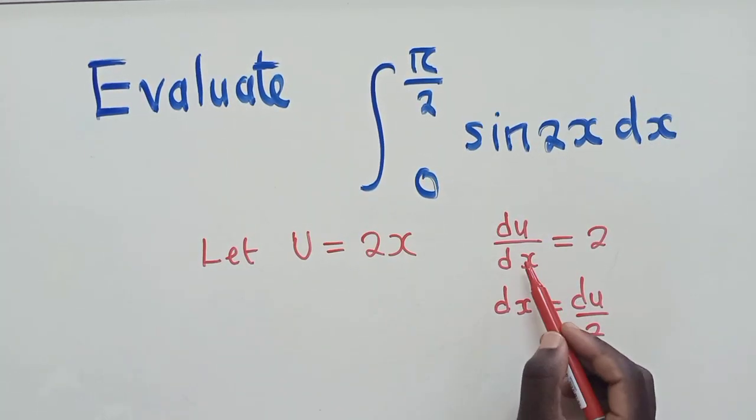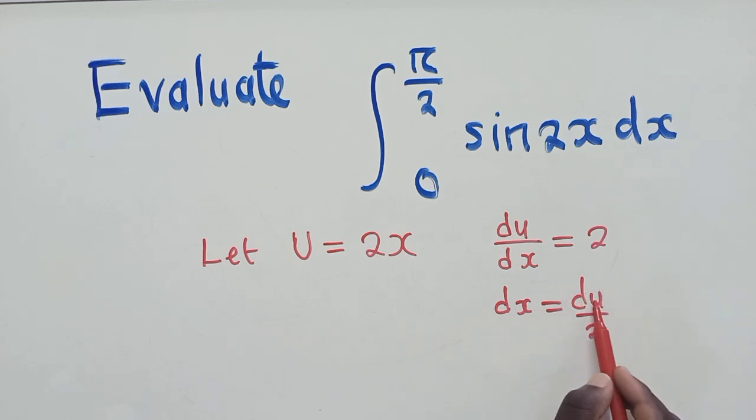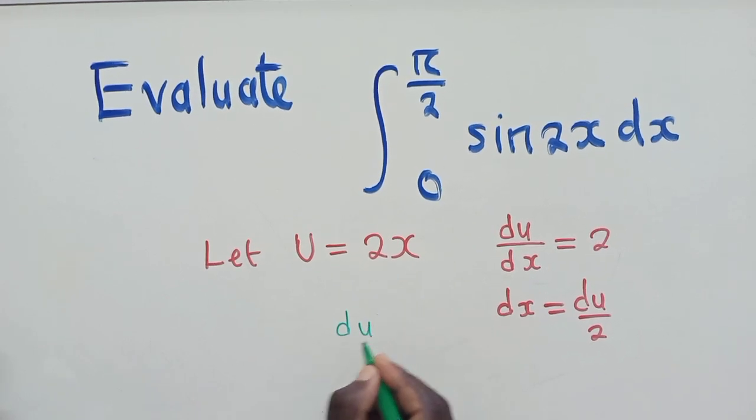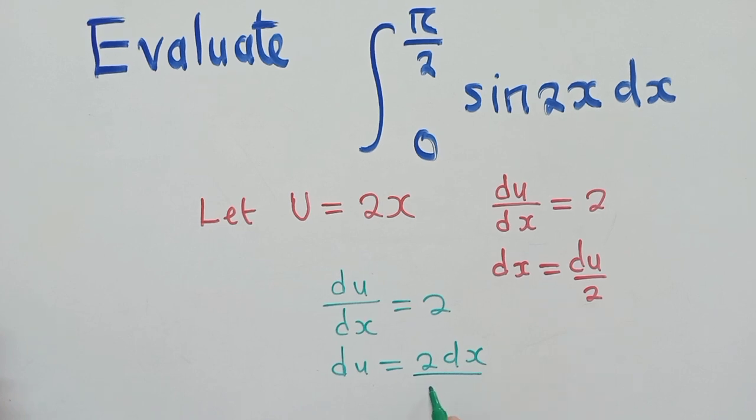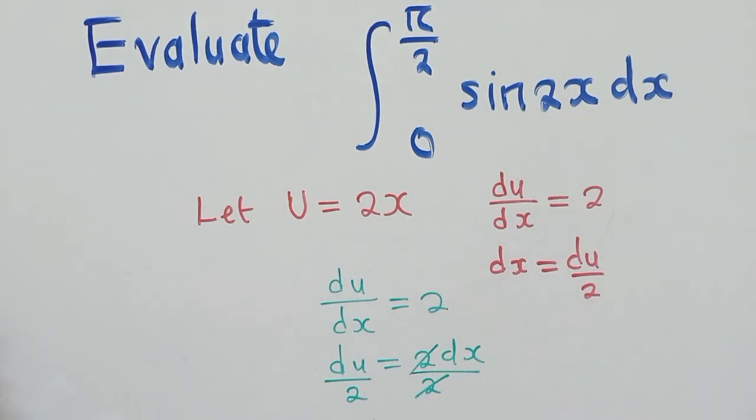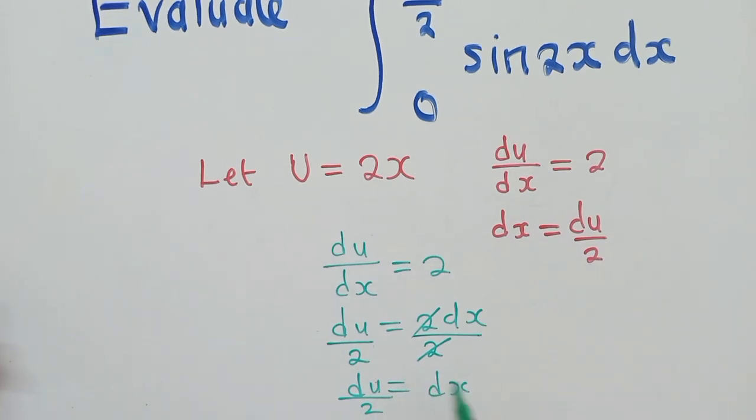So what I've just done here is I've just cross-multiplied. So du times 1, it's du, dx times 2, it will be 2dx. Now to make dx subject of the formula, you divide by 2 throughout. Let me just show you what I've done here. I have du/dx is equal to 2. So I just cross-multiplied. So I have du is equal to 2dx. And to make dx subject of the formula, I divide it by 2. This and this cancel. We remain with dx equals du over 2. And this is what we have right here. It's very important. We need to use it.